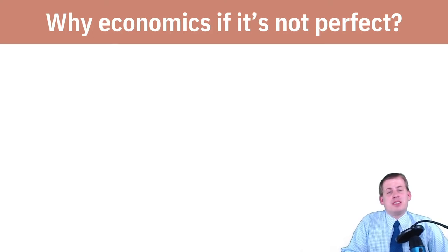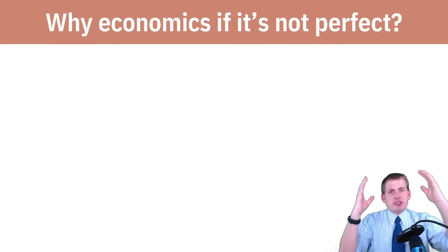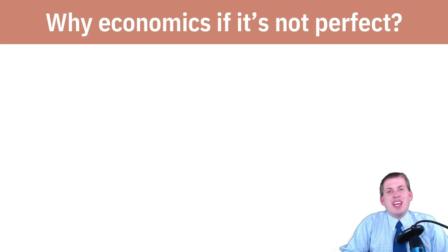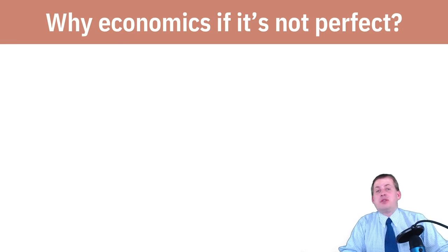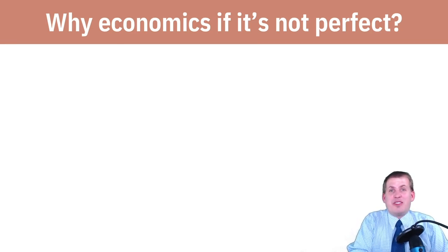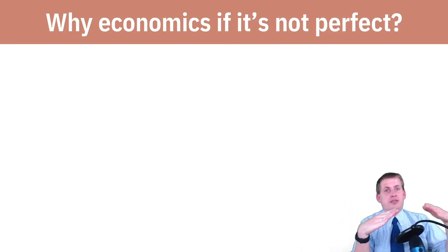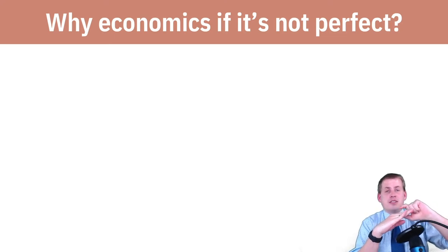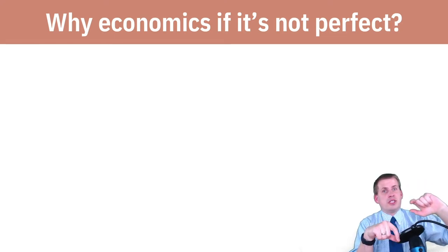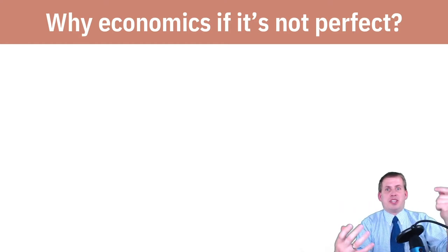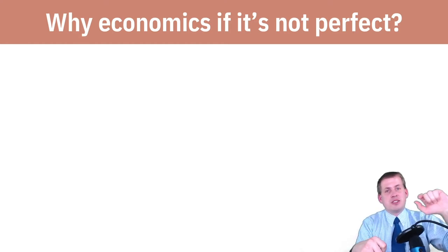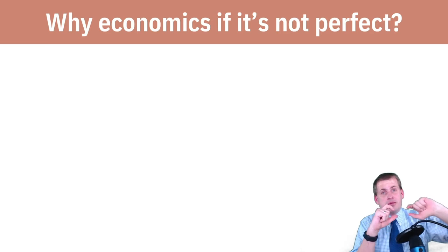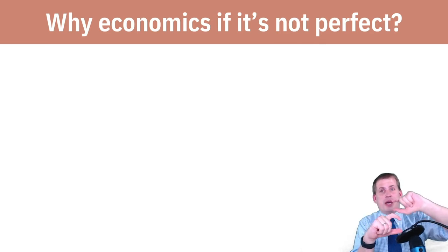With economic models — supply going up, demand going down, crossing — these are all just models, and none of them are perfect. They're all going to be wrong and will never make perfect predictions. Even with the playing cards and the paperclip game where I tried to force the price to be at six, often the price settled at $6. But sometimes you'd find really enterprising people who could sell a paperclip for $10 — that's not normal; it was supposed to just be six. So something happened to break that model.